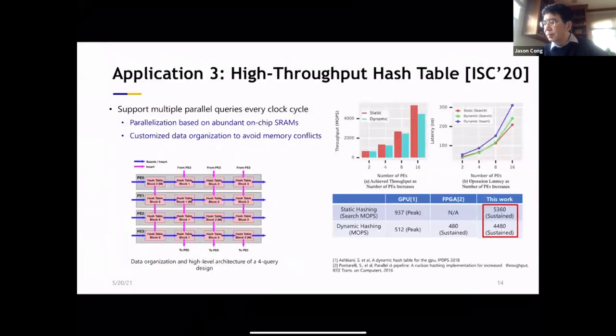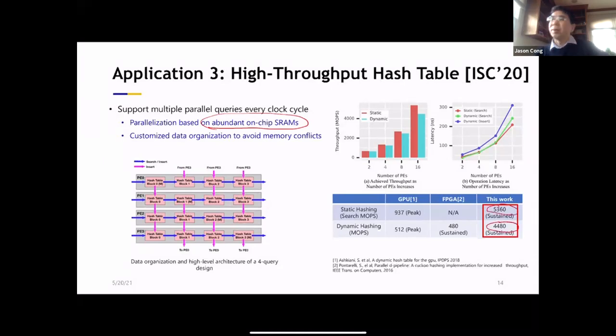There's also some very nice work done in this community. In fact, the chair of the IPDPS steering committee, Professor Victor Prasanna's group, has a very impressive work on high throughput hash tables. So they can support multiple or many parallel queries in one clock cycle by taking advantage. One is that the abundant on-chip SRAMs I talked about, and also the customized data arrangement to avoid the conflicts. So you can see this result. It's actually very impressive. You can sort in the order of 4 to 5 billion queries per second. So this is by far the highest performance I've seen.